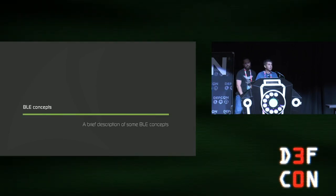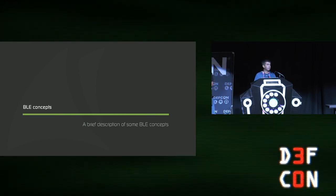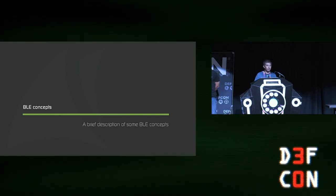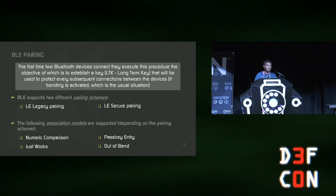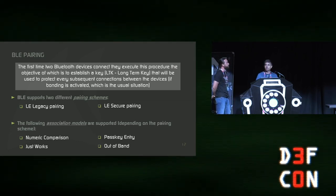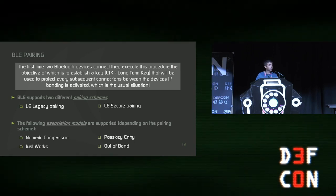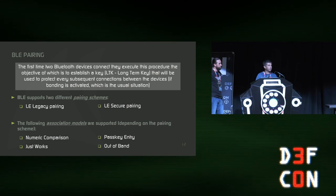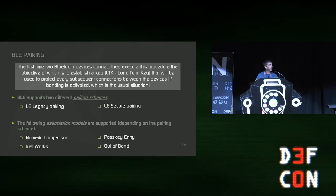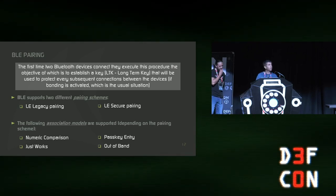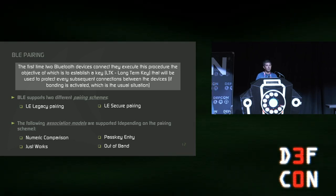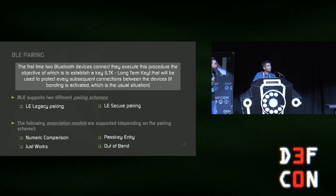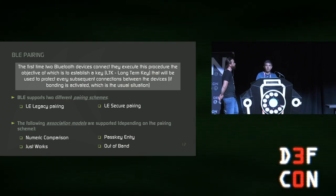As you will see, the attack is extremely simple, but it is important to introduce some Bluetooth Low Energy concepts, especially if you are not familiar with Bluetooth protocols. The first concept is pairing. When two Bluetooth devices want to protect their communications, they must complete the pairing procedure. The objective is to establish a key called the long-term key. This is only performed the first time they connect, and then they keep this long-term key and use it every time they want to connect again to derive a session key that protects that particular connection.